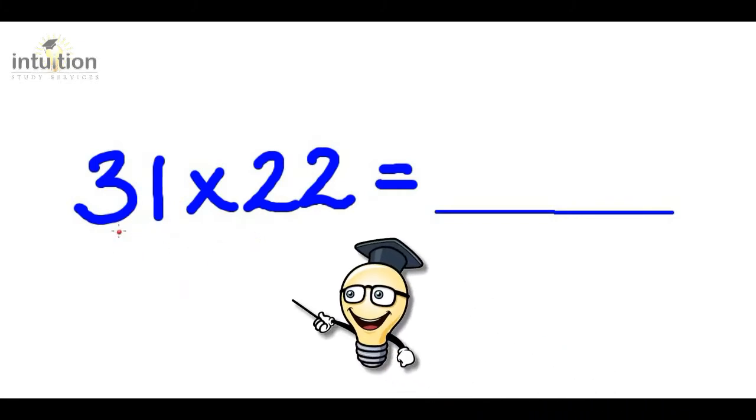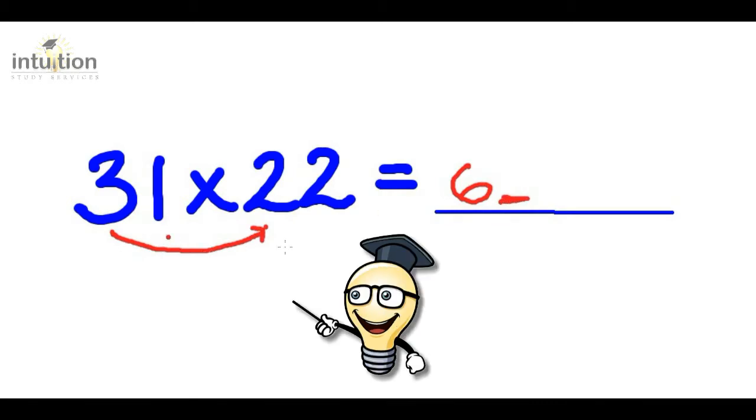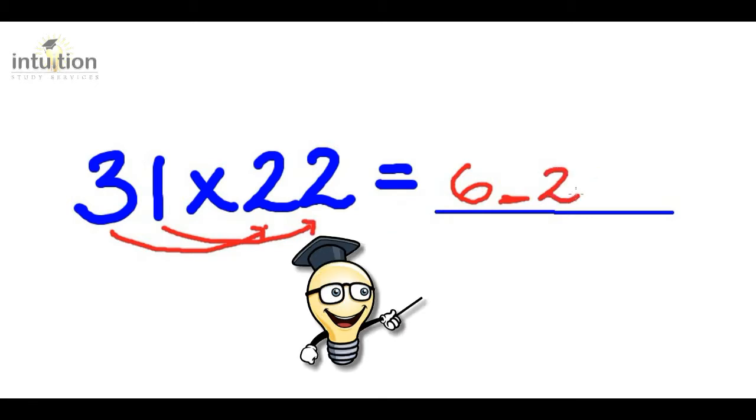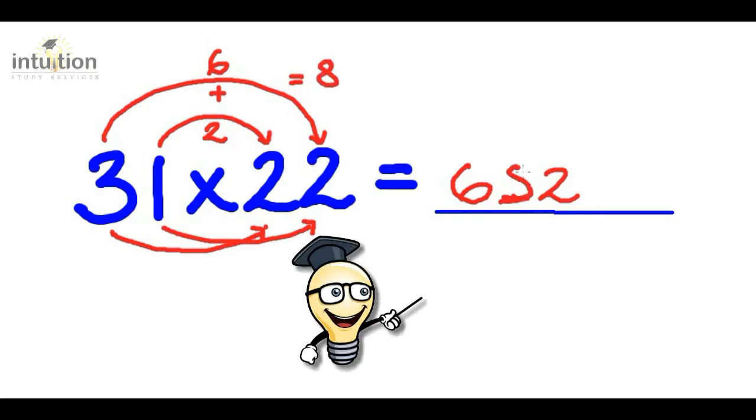I'll show you the quickest way of getting that using this method. First of all, we multiply the first digit of each number together. So that's 3 times 2, which is 6. That will give us the first digit of our answer. Then we leave a gap. Then we multiply the last digit of each number together. So that's 1 times 2, which is 2. That gives us the last digit of our answer. Then we do what we call the rainbow. So we do 3 times 2, which is 6, and we add that to 1 times 2, which is 2. That in total gives 8. So the answer is 682.